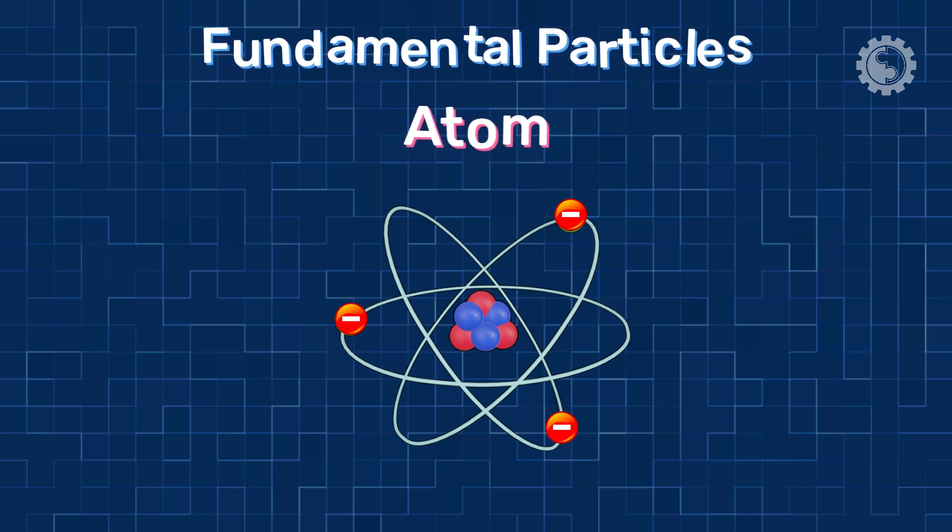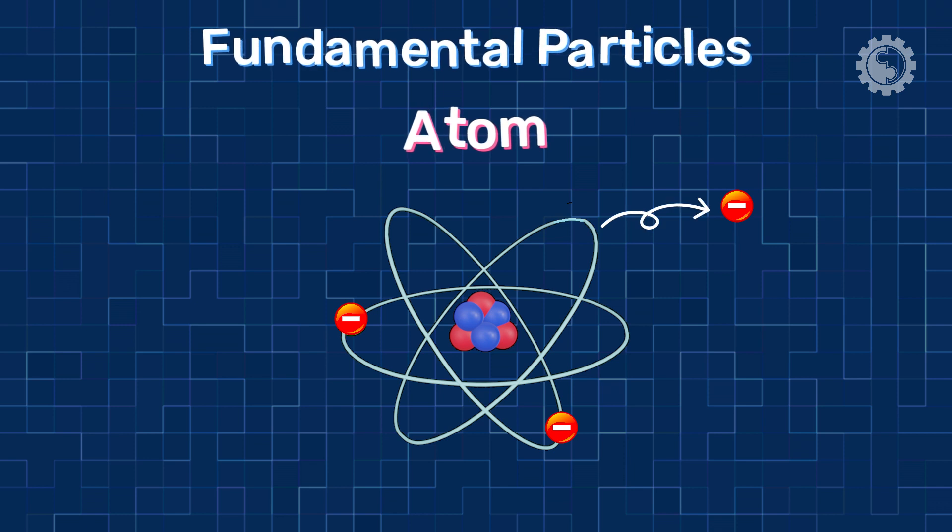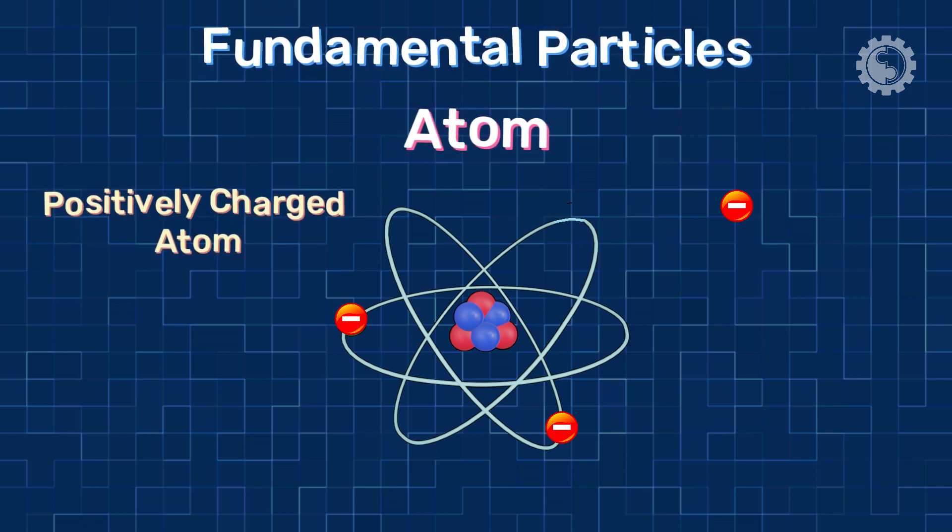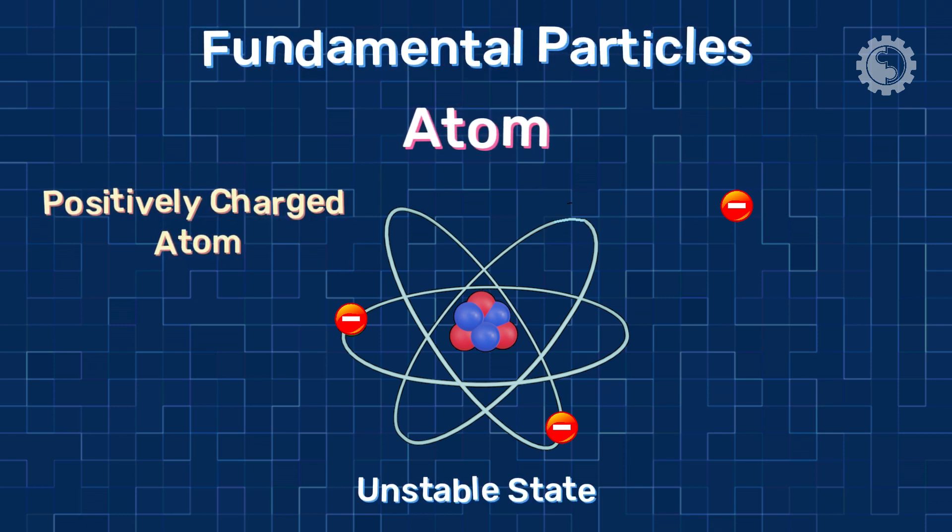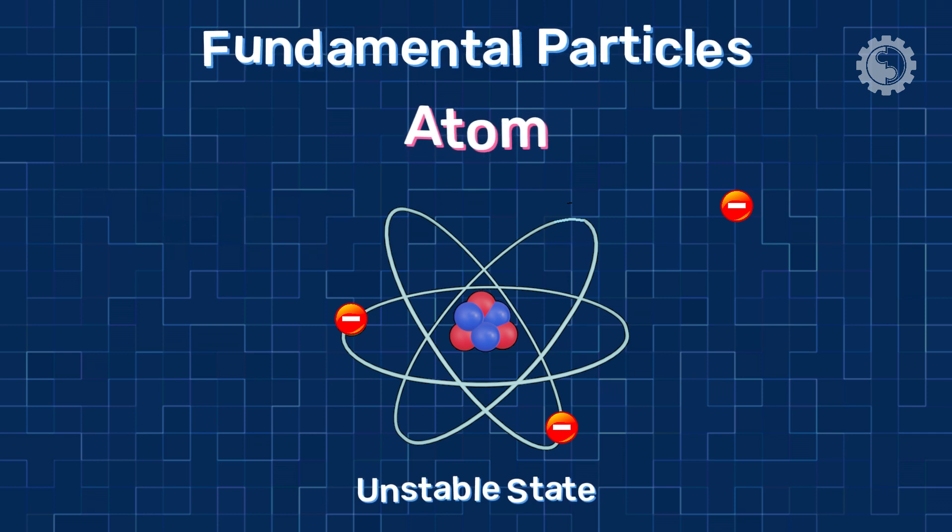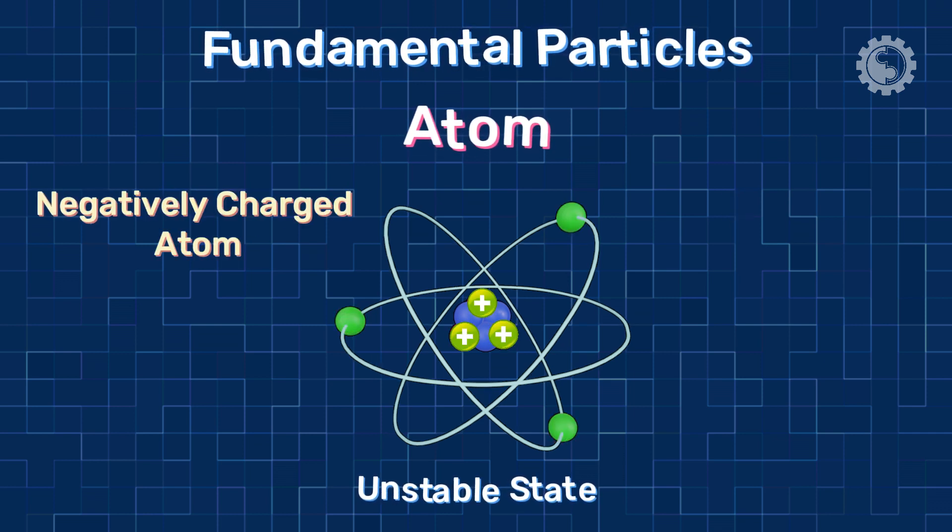If one of the electrons is lost, the atom becomes positively charged. That is called an unstable state. Similarly, it's happening in negatively charged atoms.